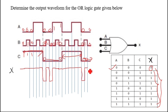For the next clock, A is 0, B is 0, and C is already 0, so all inputs are 0 and the output gives 0. So this is the output X for the three-input OR gate. If you like this video, please like and subscribe to my channel. Thank you for watching.